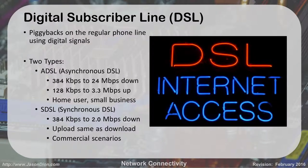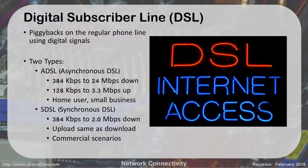DSL was really popular in the late 90s and early 2000s. Essentially it piggybacked on a regular phone line using digital signals — the analog portion carried voice, while higher and lower frequencies carried data. We had two types: synchronous and asynchronous. Asynchronous DSL downloads at a faster speed than it uploads, going anywhere from 384 kilobits all the way up to 24 megabits per second download, with upload speed usually around one to three megabits per second. This was good for home users and small businesses. Synchronous DSL offered the same upload and download speed and was used in commercial scenarios, especially for replacing video teleconferencing suites like ISDN.